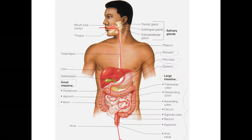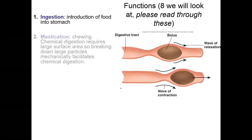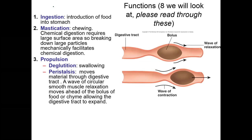The digestive system includes the salivary glands, which help break down food; the esophagus (food tube); the stomach; the gallbladder; the liver; the small intestine; the large intestine; and the pancreas.